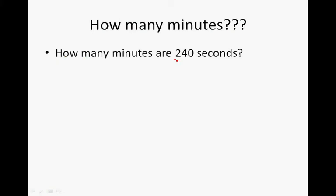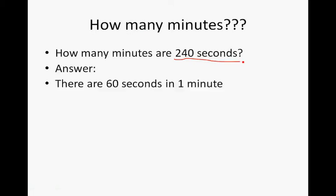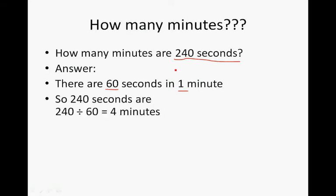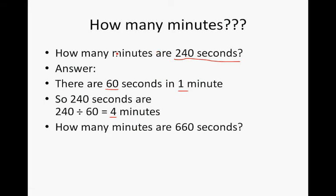How many minutes are in 240 seconds? In one minute there are 60 seconds. We don't want to increase the amount of seconds — we want to reduce it to minutes. So we go 240 divided by 60, which gives us 4 minutes. So 240 seconds is equal to 4 minutes.